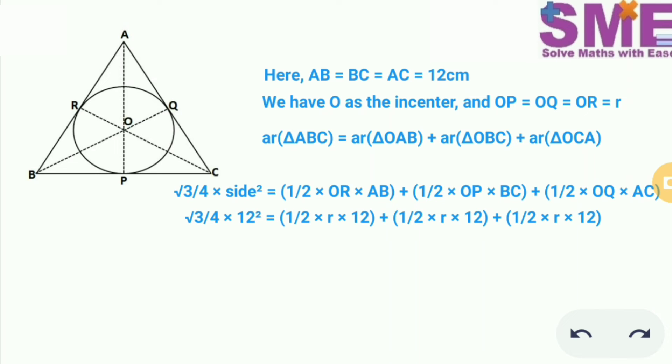Substituting the values, the side of the triangle is 12 and AB equal to BC is equal to AC is also equal to 12.